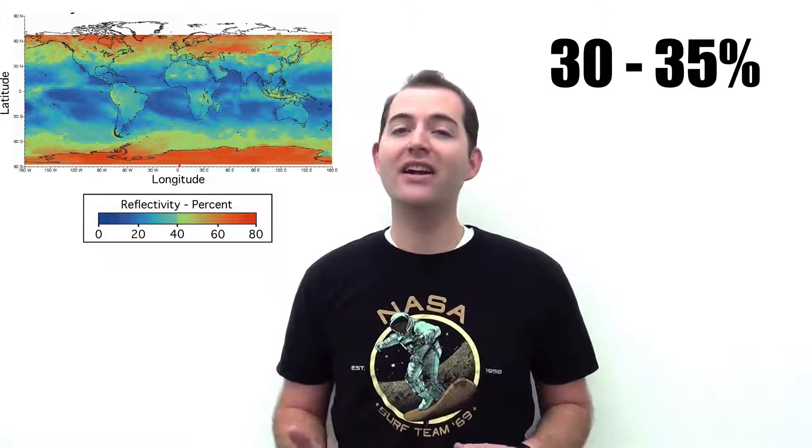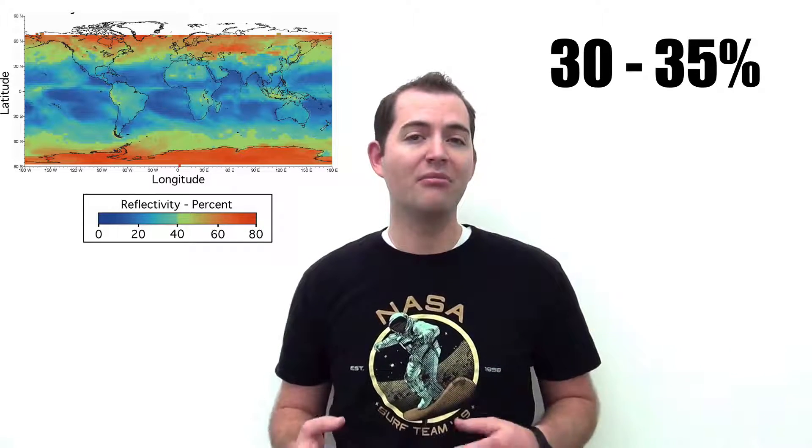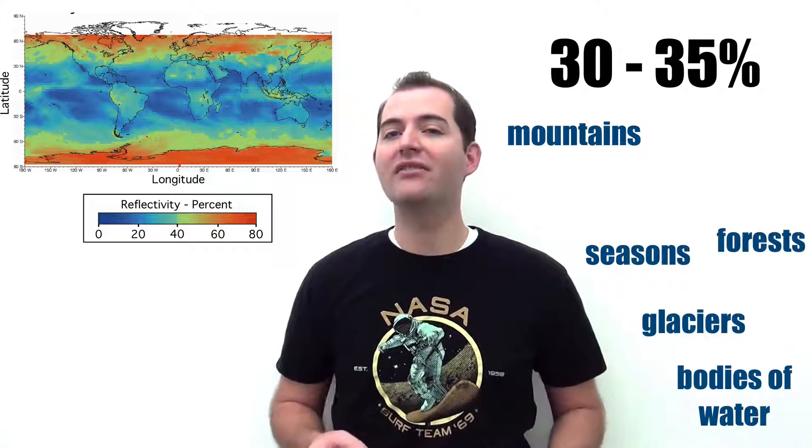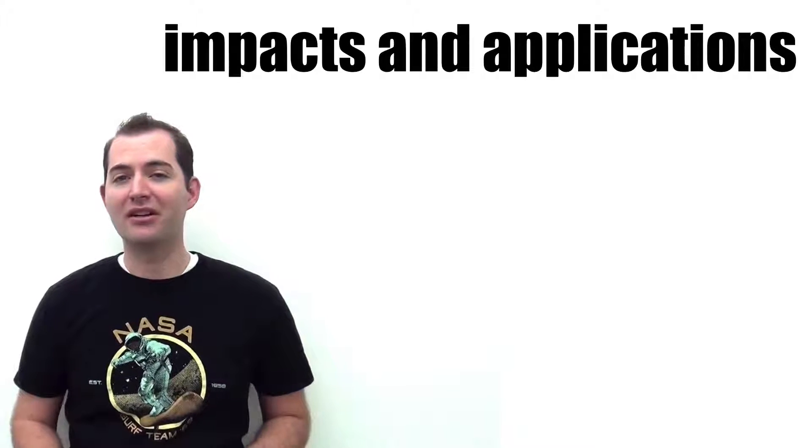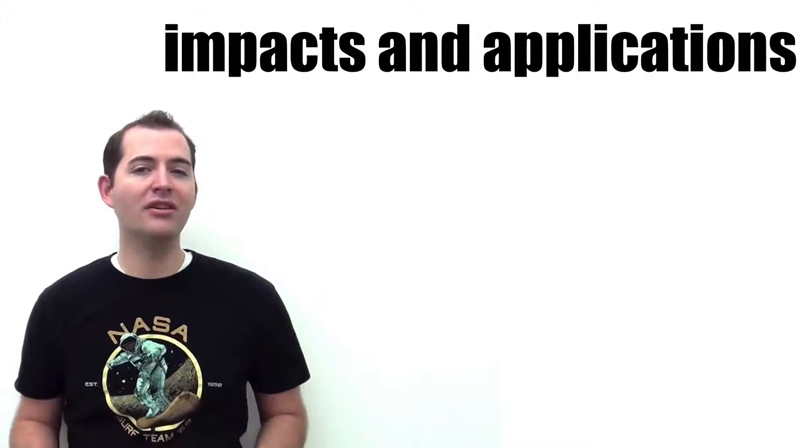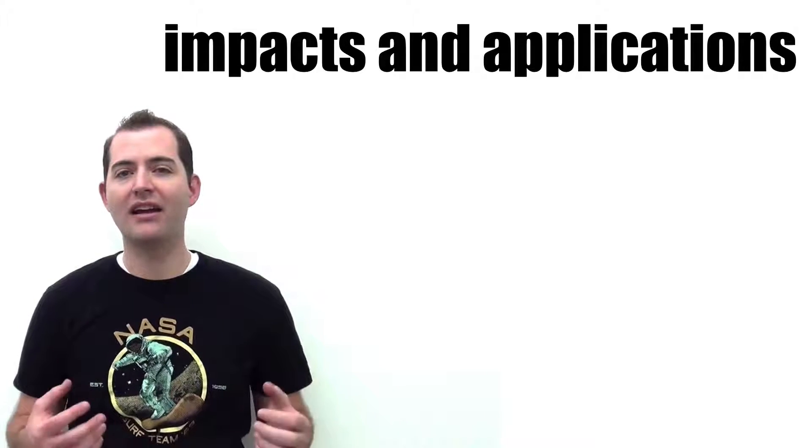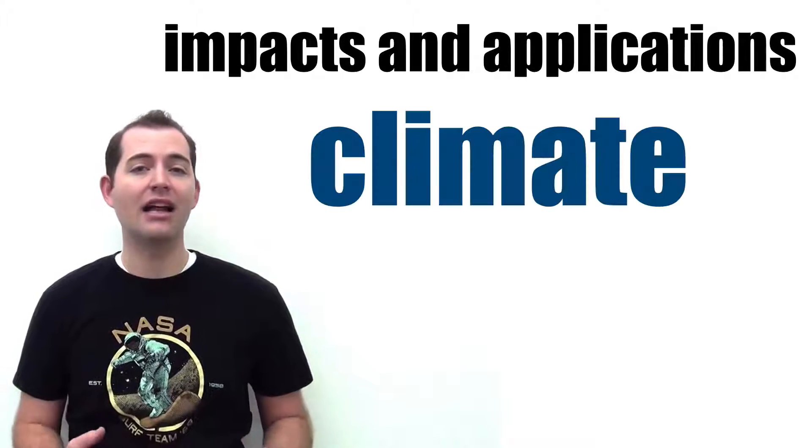Overall the earth's average albedo is somewhere between 30 and 35%, but this varies greatly across the earth based upon geologic and environmental features. There are a number of impacts and applications of albedo in our world, but some of the most common uses of this term and applications for it are in climate and weather.